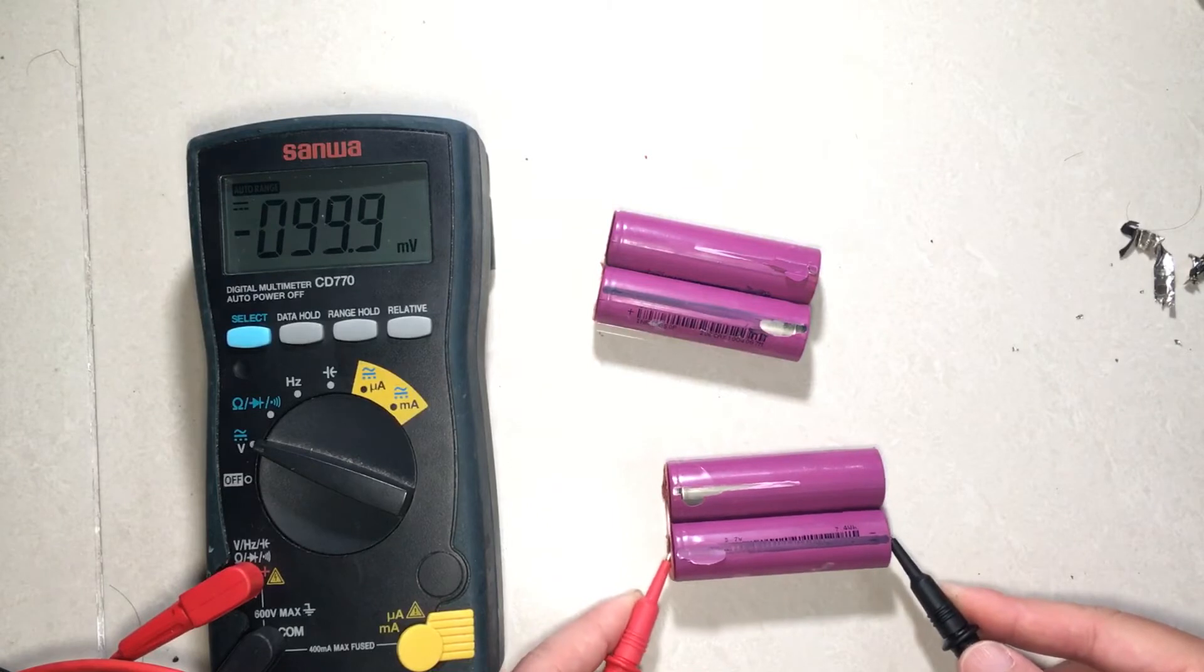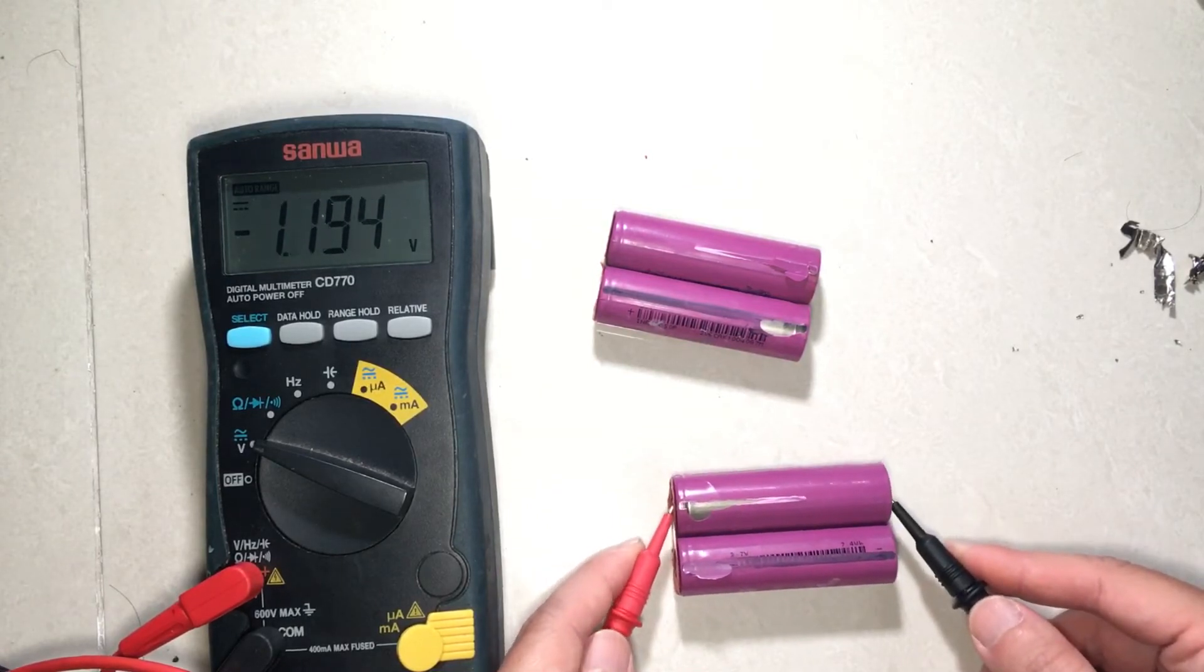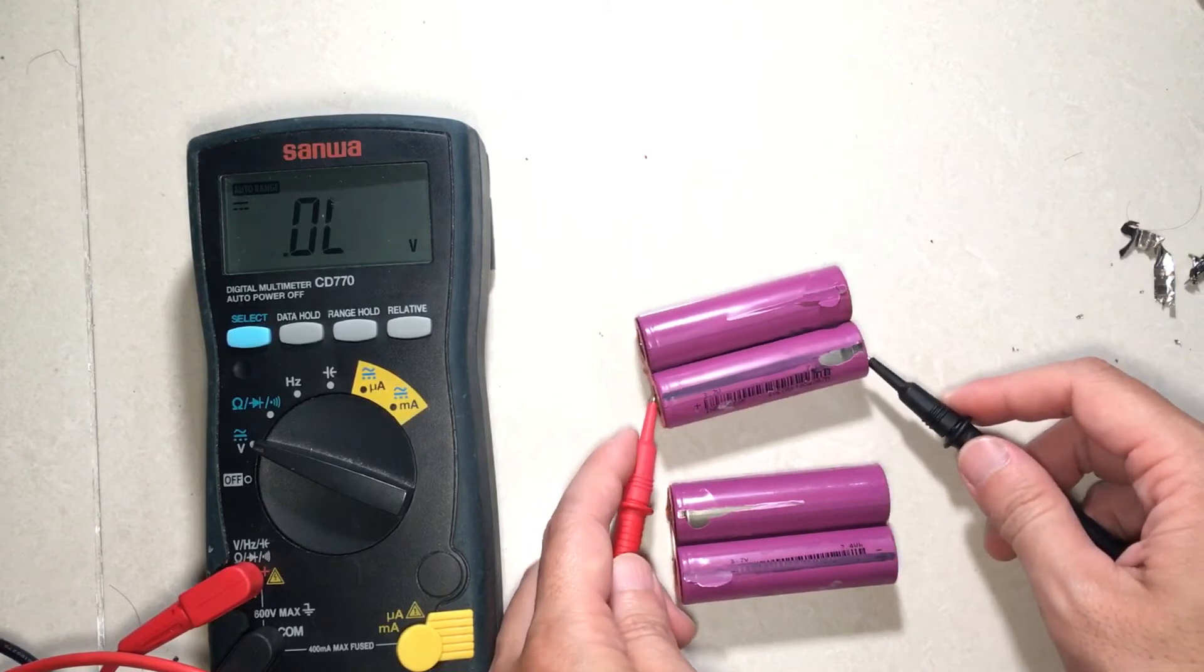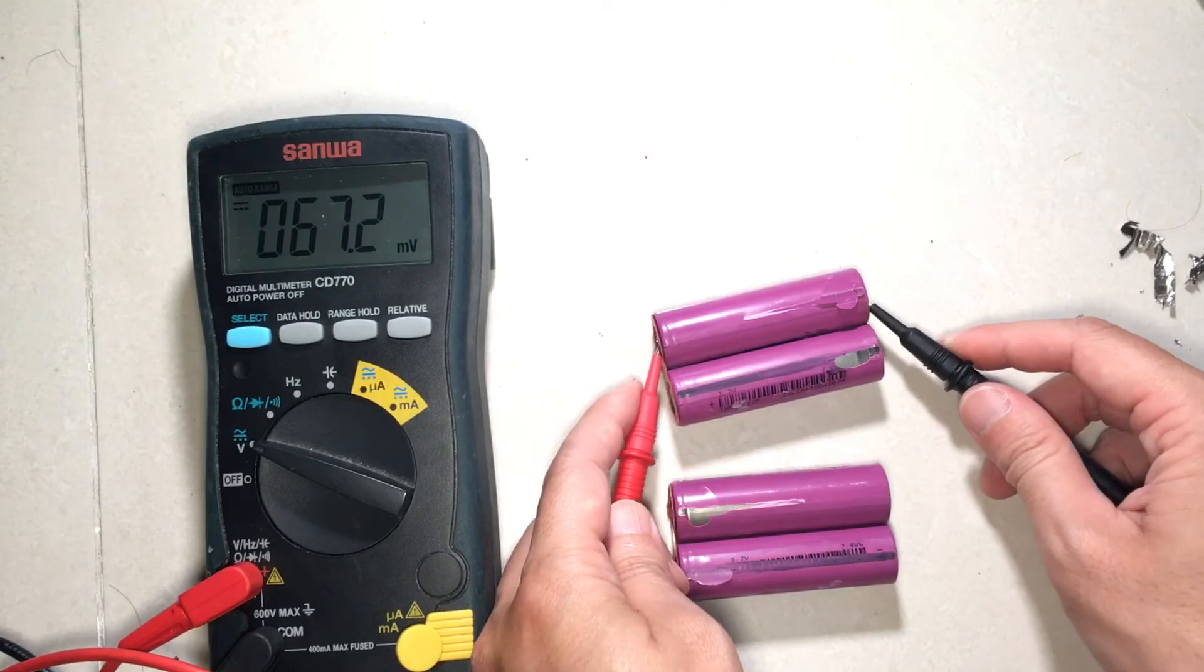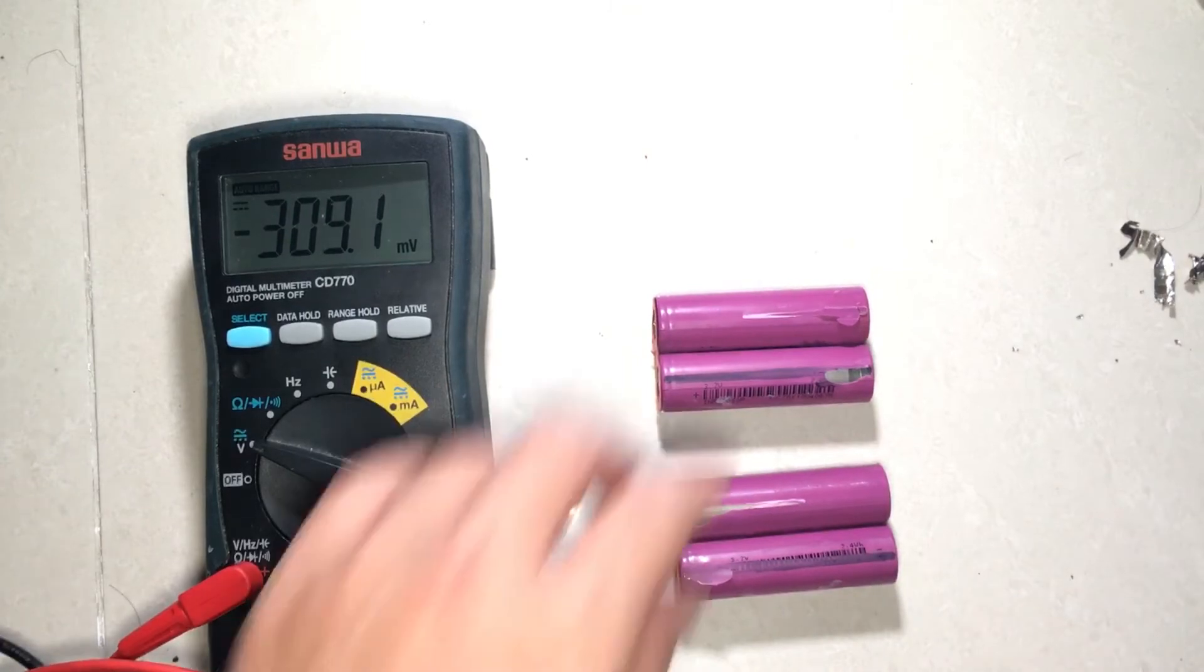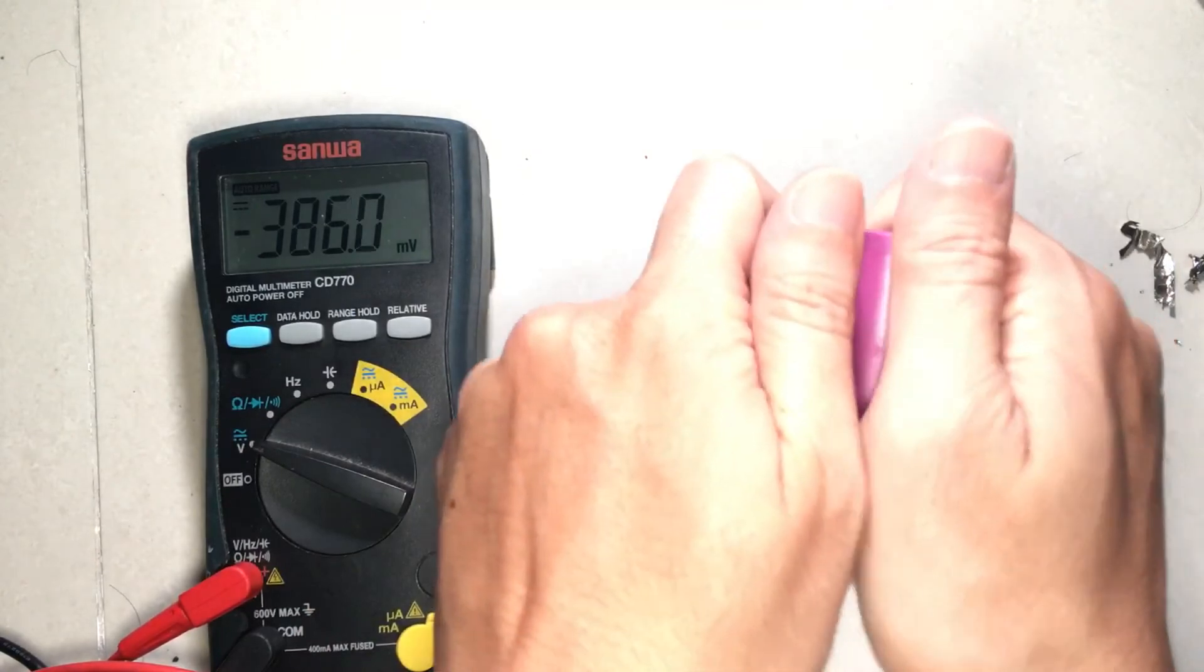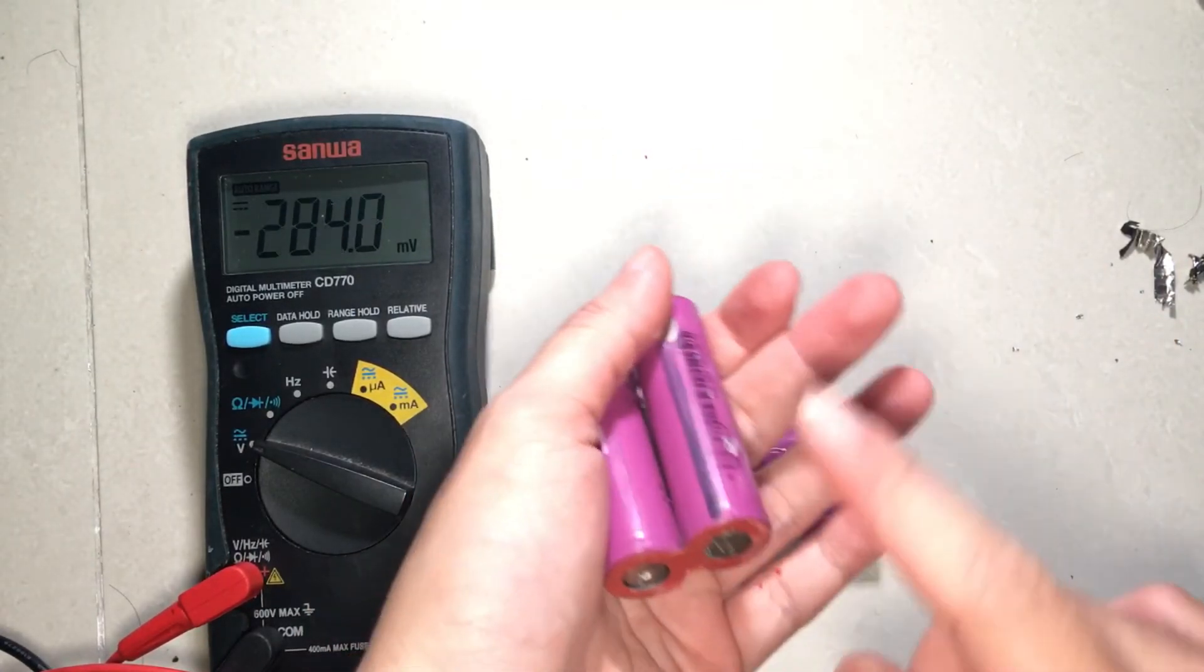So this battery is dead, this one is dead also, this one is the one that is alive, this one is dead as well. What on earth - so only one cell out of four is actually salvageable.